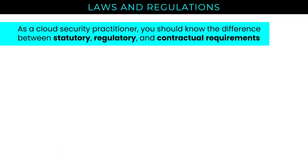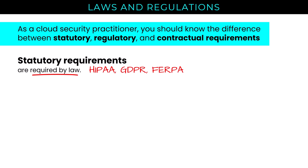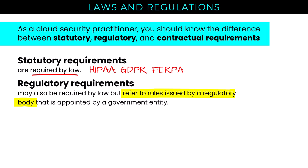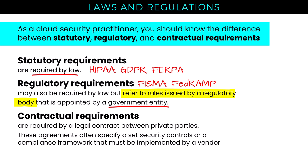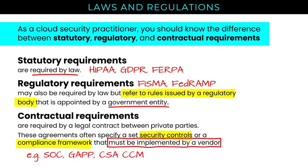You'll also need to know the difference between statutory, regulatory, and contractual requirements. Statutory requirements are required by law — HIPAA, GDPR, and FERPA are examples. Regulatory requirements are rules issued by a regulatory body appointed by a government entity — FISMA and FedRAMP are good examples. Contractual requirements are required by a legal contract between private parties and often specify a set of security controls or a compliance framework — for example, requiring SOC audits, generally accepted privacy principles, or the CSA Cloud Controls Matrix. PCI DSS is a good example of a contractually enforced regulatory requirement.